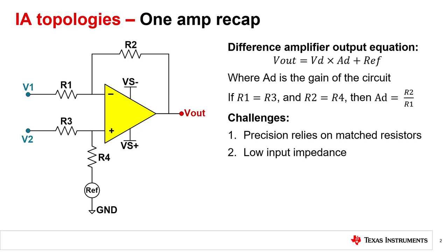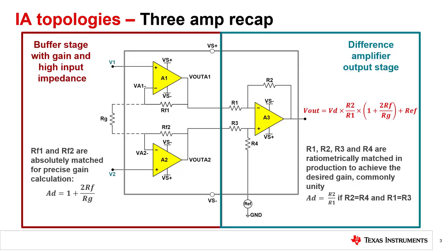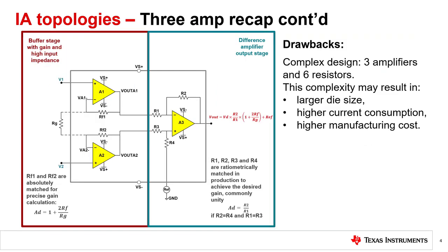We resolved both of these issues by introducing the 3-amp IA. In this 3-amp IA circuit, we added two resistors and two amplifiers to form a balanced input-balanced output stage. Resistors R1 through R4 are ratio-metrically matched in production to achieve the desired gain, and resistors RF1 and RF2 are absolutely matched since their interaction with RG determines the gain of the entire circuit. This resolves the issues of precision-matched resistors and low input impedance. However, this topology requires a complex design — three amplifiers and six passive components — resulting in larger die size, higher current consumption, and higher manufacturing cost. If any of these drawbacks are a concern, you may consider a 2-amp IA topology.